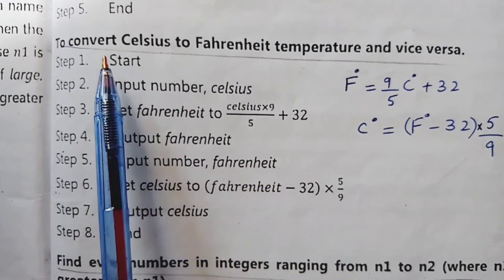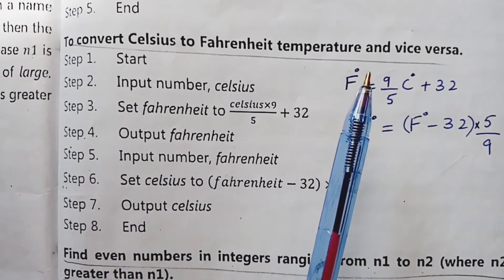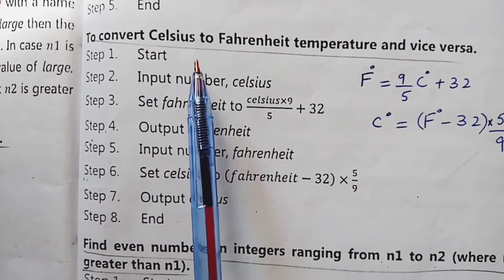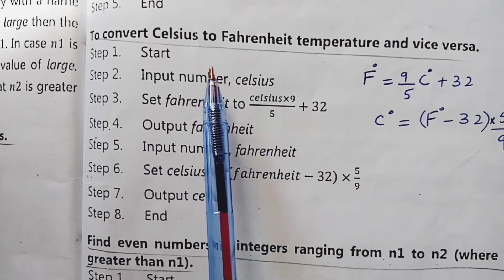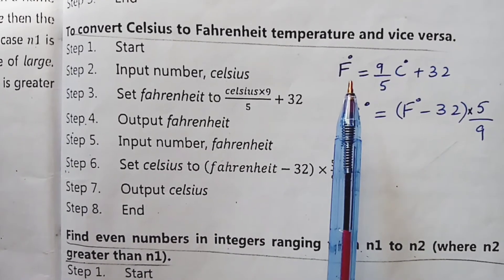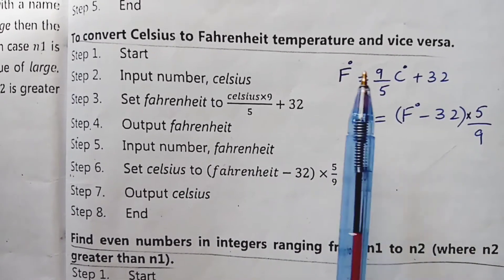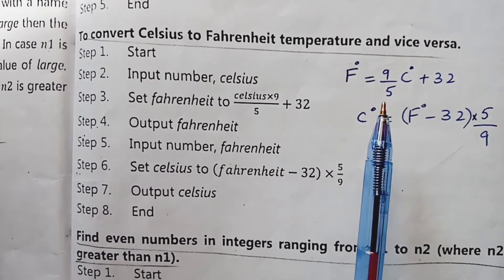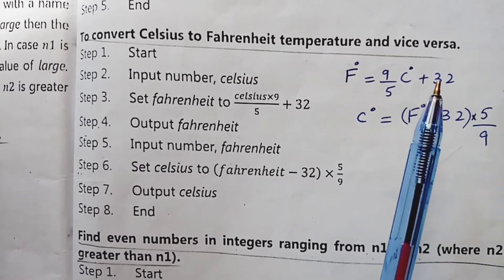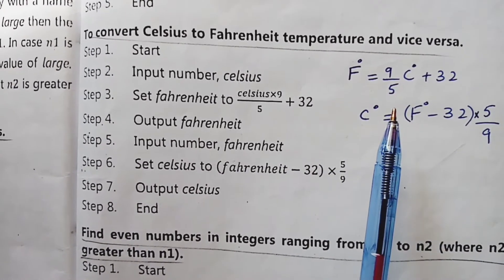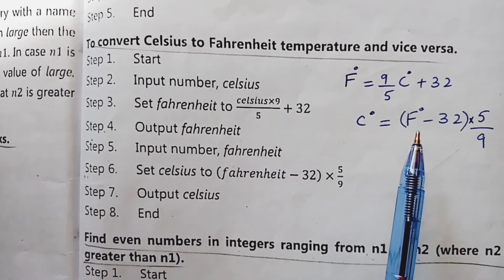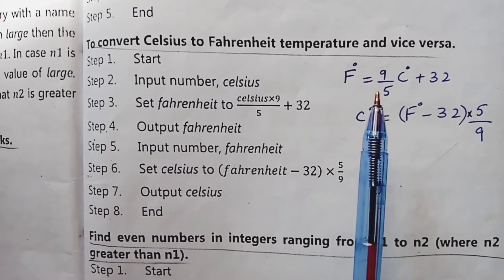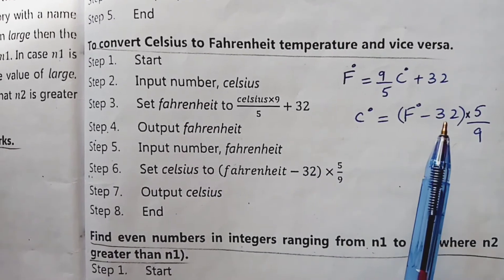Example number 8 is to convert Celsius to Fahrenheit temperature and vice versa. We have written the algorithm for both conversions. The formula to convert Celsius to Fahrenheit is: multiply Celsius by 9, divide by 5, then add 32. For the reverse — Fahrenheit to Celsius — the formula is: F minus 32, then multiply by 5 and divide by 9.